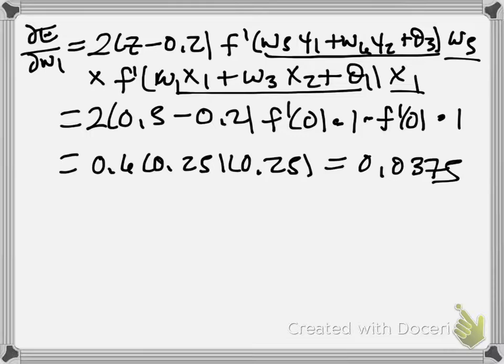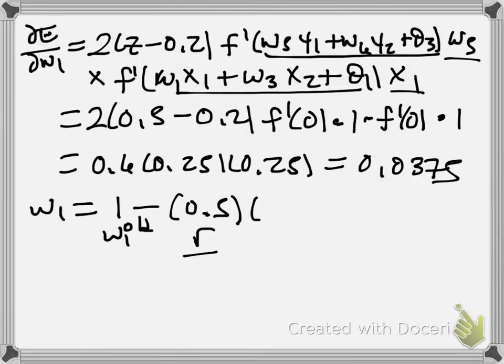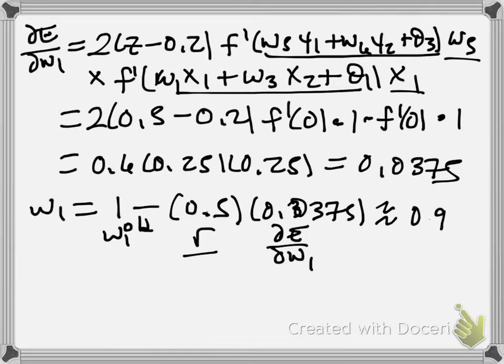And finally, when we do our update, W1 is equal to 1 minus 0.5 times, because this is our R here, this is our original or like W1 old, this is R, our learning rate, and then this is 0.0375. So that's our dE/dW1. And we can work that out. That's about 0.981. Cool.